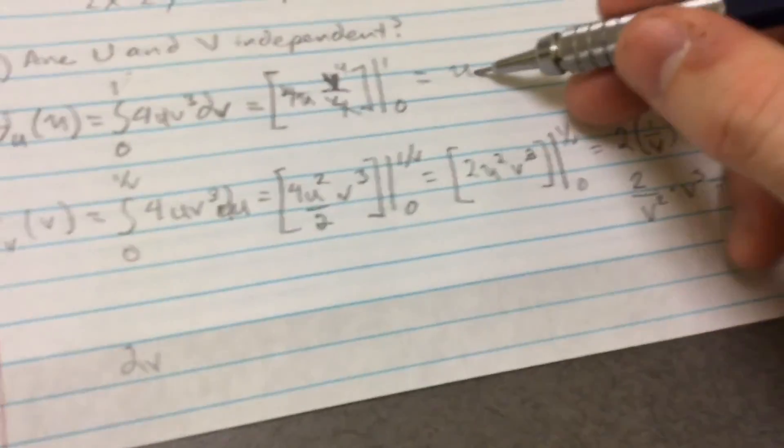So now we want to multiply them together. 2V times U. 2VU. Is that equal to that? No, it isn't. So it's not independent. And that's that.